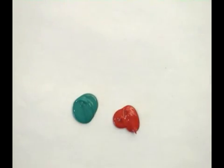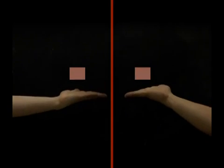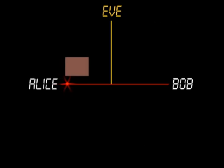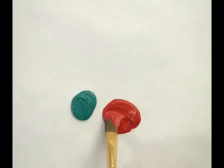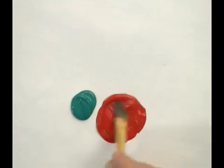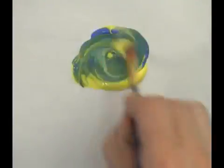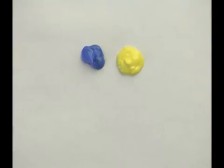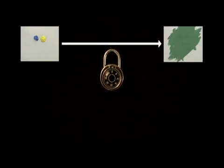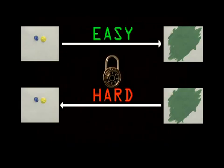How is this possible? First, let's explore how this trick is done using colors. The trick is based on two facts. One, it's easy to mix two colors together to make a third color. And two, given a mixed color, it's hard to reverse it in order to find the exact original colors. This is the basis for a lock — easy in one direction, hard in the reverse direction. This is known as a one-way function.